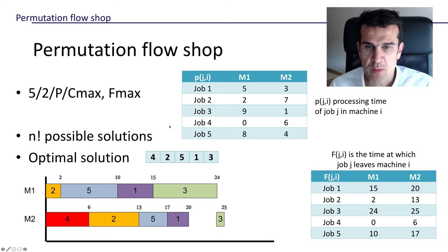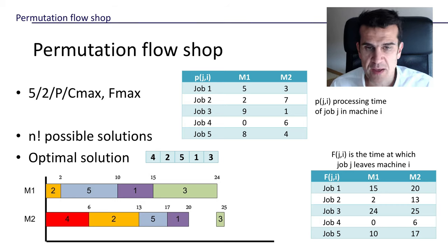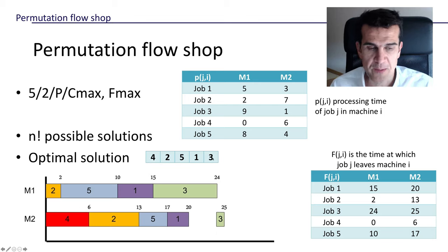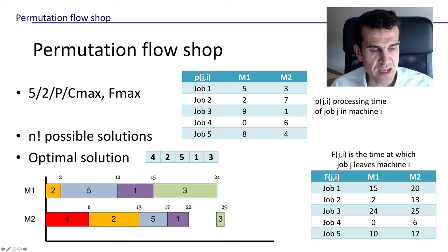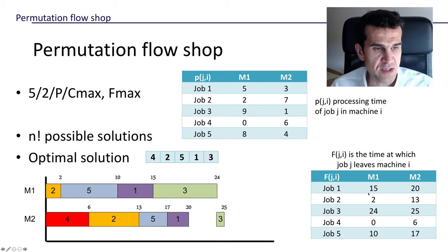As we've already seen, the number of possible solutions is m factorial — in this case five factorial — because once we've decided a certain order for the first machine, that order will be kept for any subsequent machine. In this particular example, an optimal solution is the sequence where we start processing job four, then two, five, one, and three. What we're going to learn is to derive the matrix that tells us the time at which each job leaves its machine.